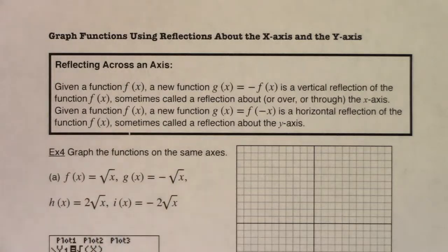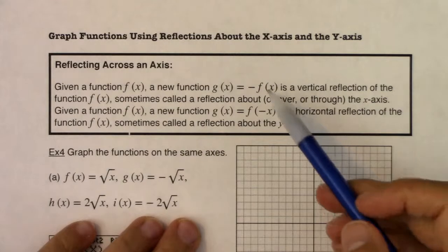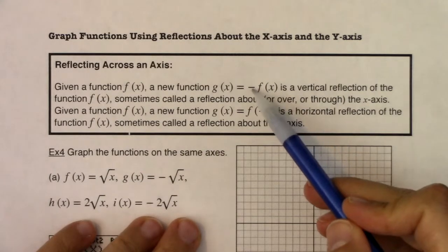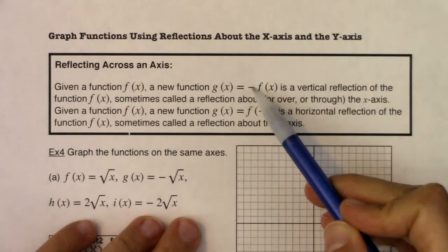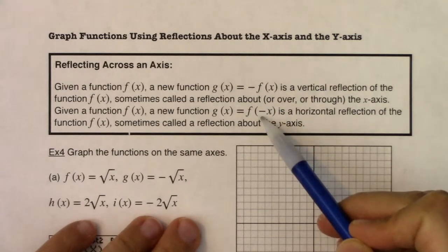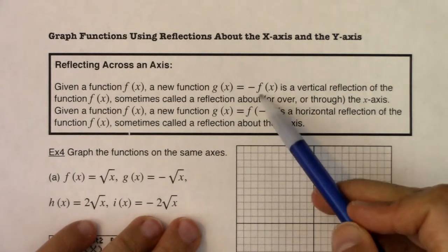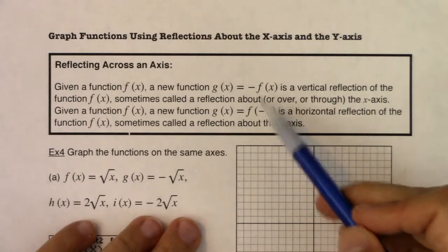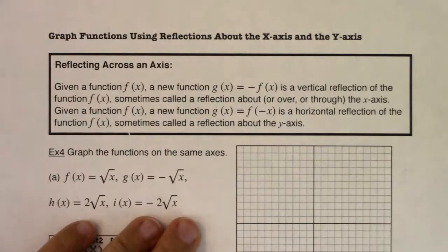In example 4, we're going to take a look at different reflections based on where the negative symbol is placed — is it outside of the function or inside of the function? Reflection around the x axis or y axis. We want to get to the point where when we look at a function, we recognize which reflection is taking place.